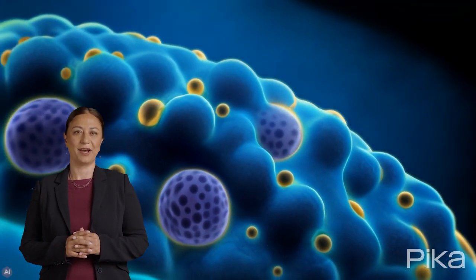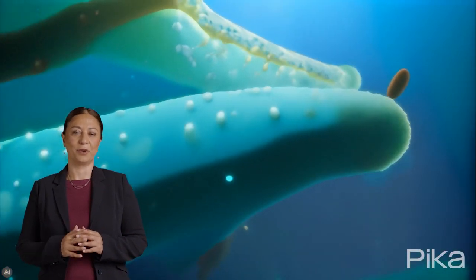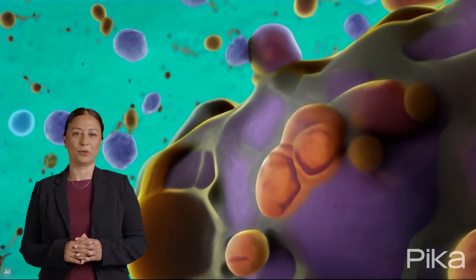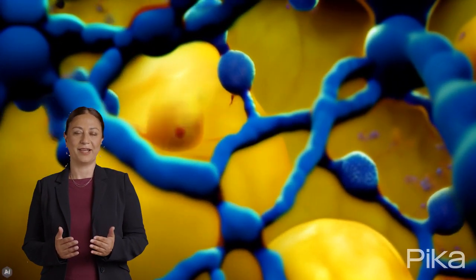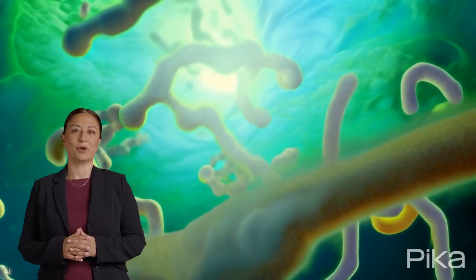Close to the ER, the Golgi apparatus functions as a cellular post office, modifying, sorting, and packaging proteins and lipids before they are sent to their final destinations, either within or outside the cell.